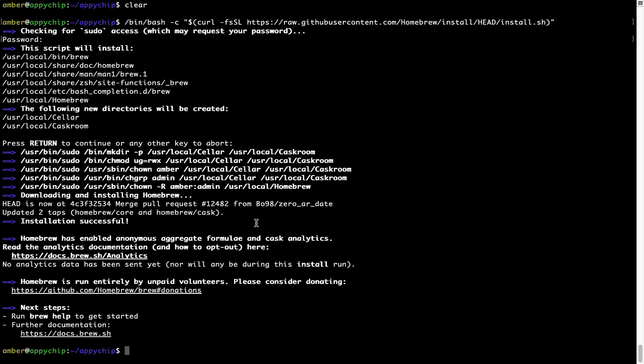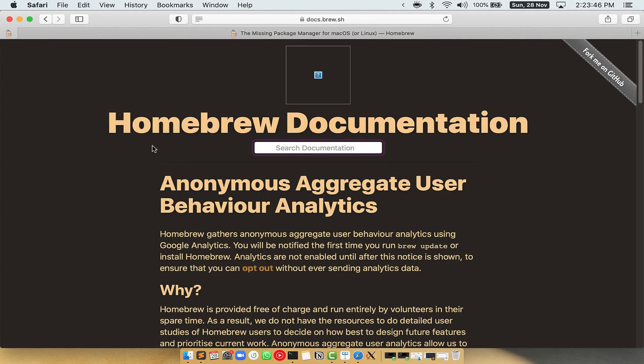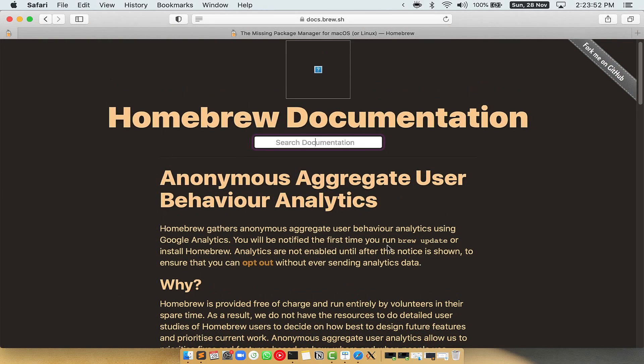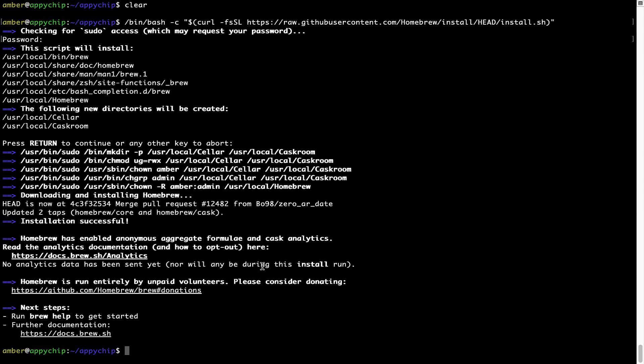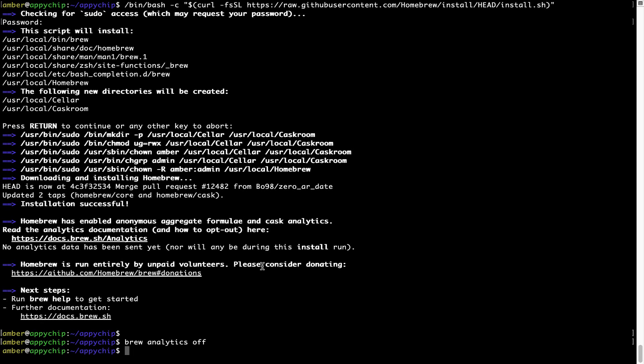Now before we proceed, I would like to highlight that brew collects anonymous usage data via Google Analytics. As you can see on this page, if you want to opt out, you can simply run this command: brew analytics off, and press Enter, which simply disables the anonymous usage data collection on your Mac.